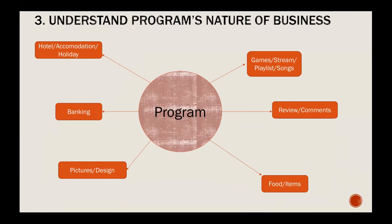The third tip: understand the business nature of the program. This is very important if you're involved in security jobs or as a consultant — you need to understand the objective before you start executing. Some programs come from hotels, banking, picture or design sites, game streaming, playlist apps like Uber for transportation; some depend on reviews and comments as their profit. Others depend on food or items, and some like BugCrowd depend on other programs as their clients.